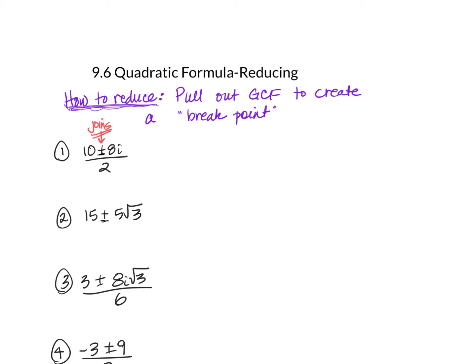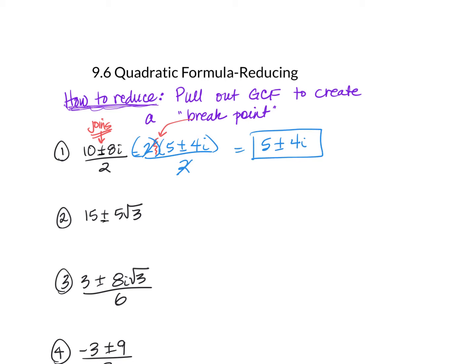If I take a GCF of 2 out, I would have 5 plus or minus 4i over 2. Now we're creating this break point — it's like 2 times all that stuff, and I can reduce that way. So my final answer is 5 plus or minus 4i. You can't just reduce the 2 unless you've factored it out.